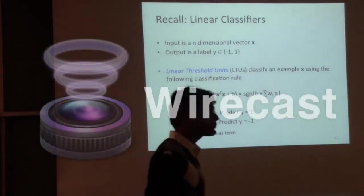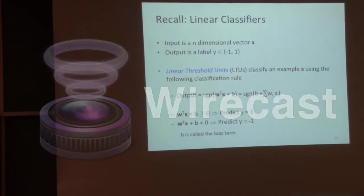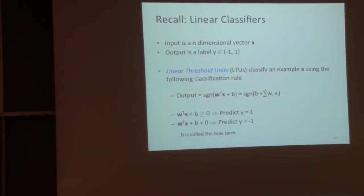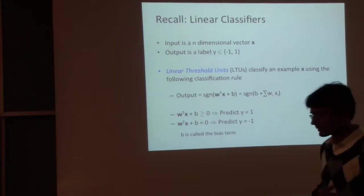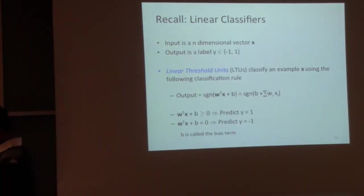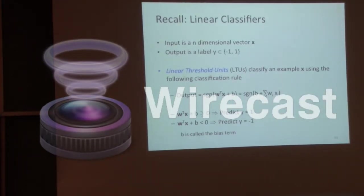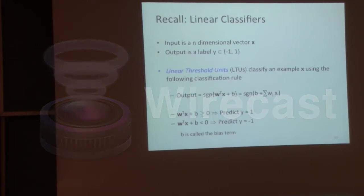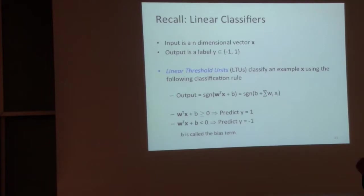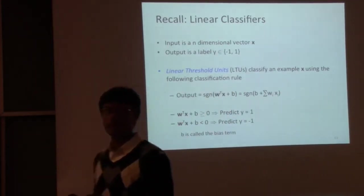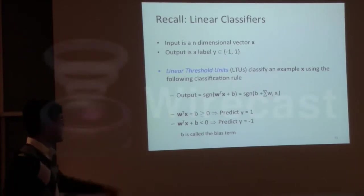The setup is: inputs are vectors in n dimensions and outputs are true or false — minus one or plus one. For this section of the class, I will use minus one to indicate false because it makes the math work out a little easier. The function used to predict is parameterized by a weight vector w, which is an n-dimensional vector. You take the dot product of w and x, add a bias term — that's the score for this input. If the score is positive, you say plus one; if negative, you say minus one. You predict the sign of that score.